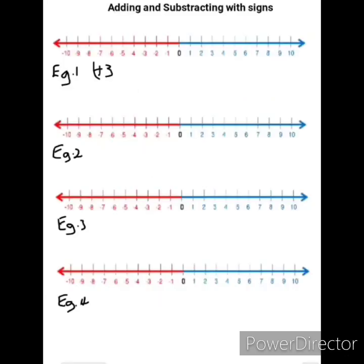Adding and subtracting with signs: our number line represents positive to the right and negative to the left. Example 1: if we have positive 3 plus positive 2, we have two positive signs together, which means we multiply them. A positive multiplied by a positive equals a positive. The 3 represents where we are on the number line, the positive means we go to the right, and the 2 means we go two places to the right, giving our answer as positive 5.